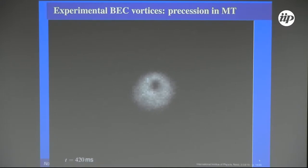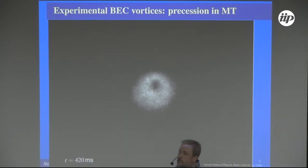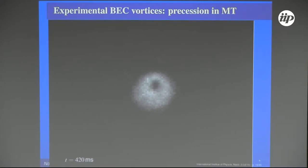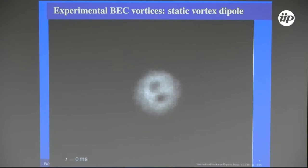You have 10^6 atoms and the in-situ sample is of the order of tens to hundreds of microns. The core of the vortex is artificially enhanced because of the imaging technique; the healing length will be of the order of one micron where the Thomas-Fermi radius is around a hundred. So do not take this for granted — this is after expansion. What happens if instead of having just one vortex, I have two?